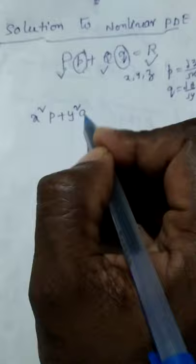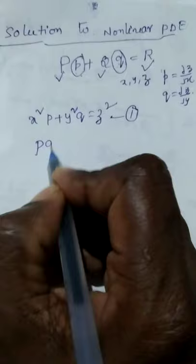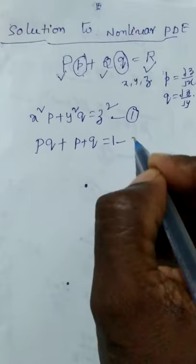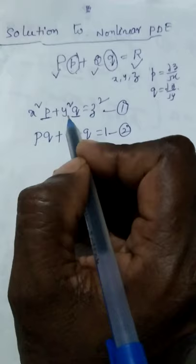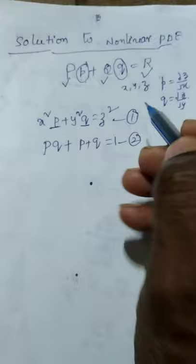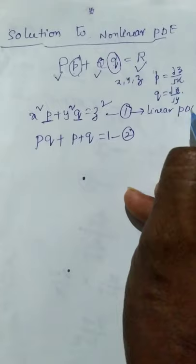Consider Example 1: x²p + y²q = z². In this first example, the appearance of p is only one time and the appearance of q is also only one time in the given equation, and p and q do not appear in the same term. Hence it is a linear partial differential equation.